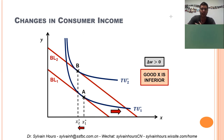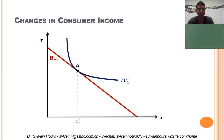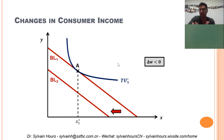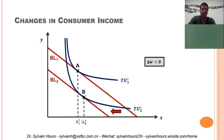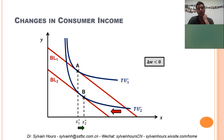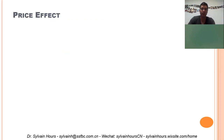I also have the case of a decrease in income for an inferior good. We start from the initial equilibrium, decrease money income so the budget line shifts inward, and we have a new equilibrium point B on the highest achievable indifference curve. As a result of the decrease in income, the quantity demanded of good X has increased — so we confirm good X is an inferior good. And the quantity demanded of good Y has decreased as a result of the decrease in income, so good Y is a normal good.